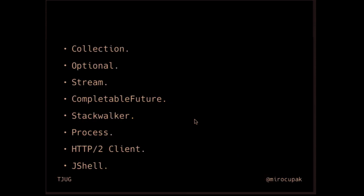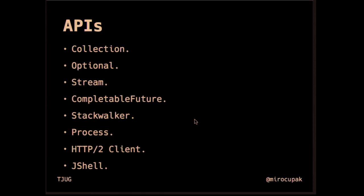The goal of this talk is to go through an opinionated list of my favorite APIs in Java 9. We'll take a look at enhancements to four existing APIs: convenience factory methods for collections, Optional, Stream, and CompletableFuture. We'll also take a look at four new APIs in Java 9: StackWalker, the new ProcessHandle API, HTTP2Client, and JShell.